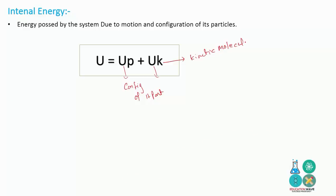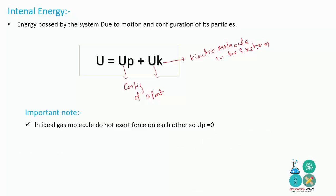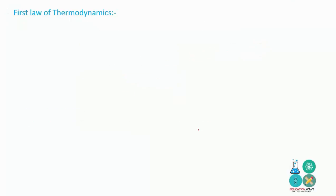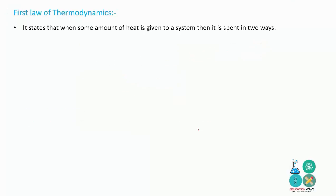UK is the kinetic energy of the molecules in the system. An important note for internal energy: in an ideal gas, molecules do not exert force on each other, so UP is equal to zero.